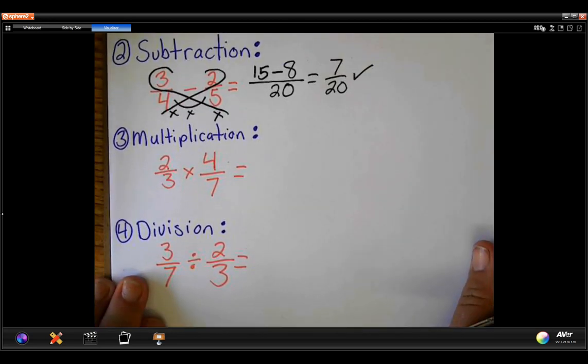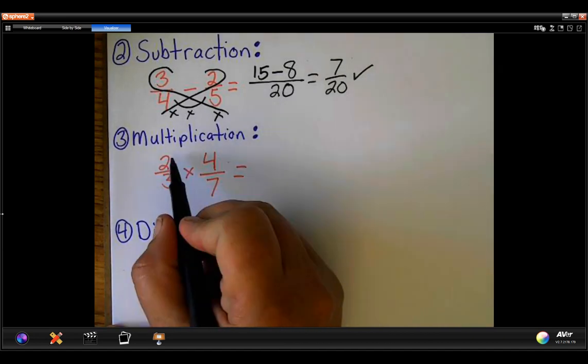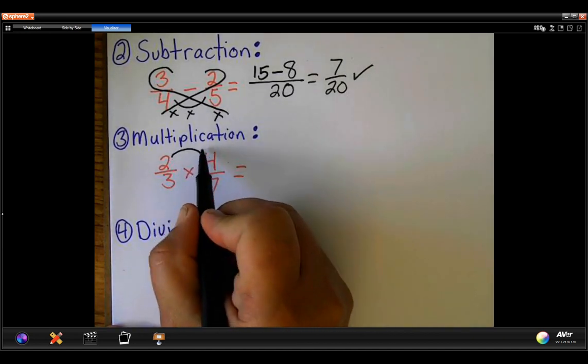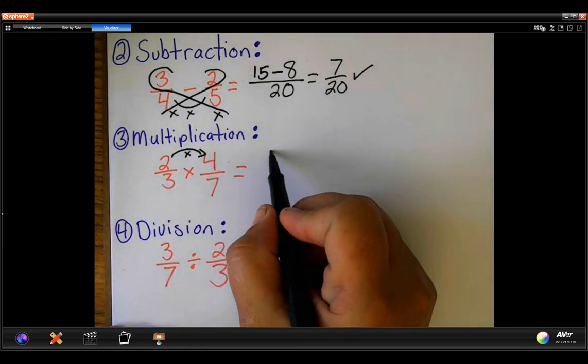Multiplication and division. Multiplication is super easy. You're going to multiply the top two numbers. 2 times 4 is 8.